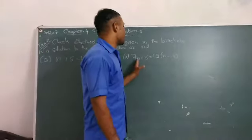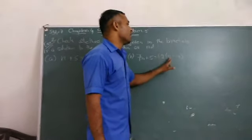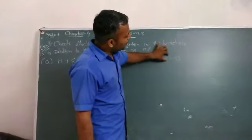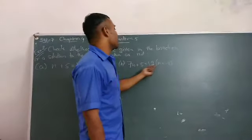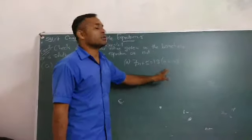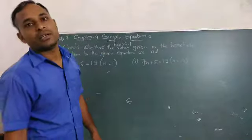In this equation, 7n plus 5 equals 19. Here, n equals minus 2. But after putting the value n equals minus 2, we get 19. So we satisfy this value. n equals minus 2 is the solution of equation.